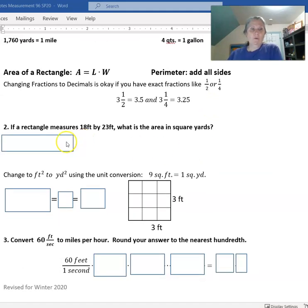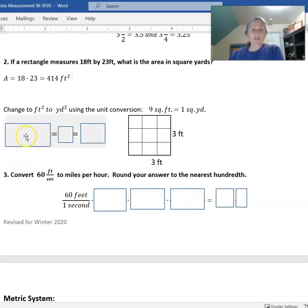The first problem I want to work out with you is: if a rectangle measures 18 feet by 23 feet, what's the area in square yards? We know the area is just length times width, so if we take 18 times 23, we get 414 square feet. Remember, it's two-dimensional, so it's to the second power whenever we're talking about area.